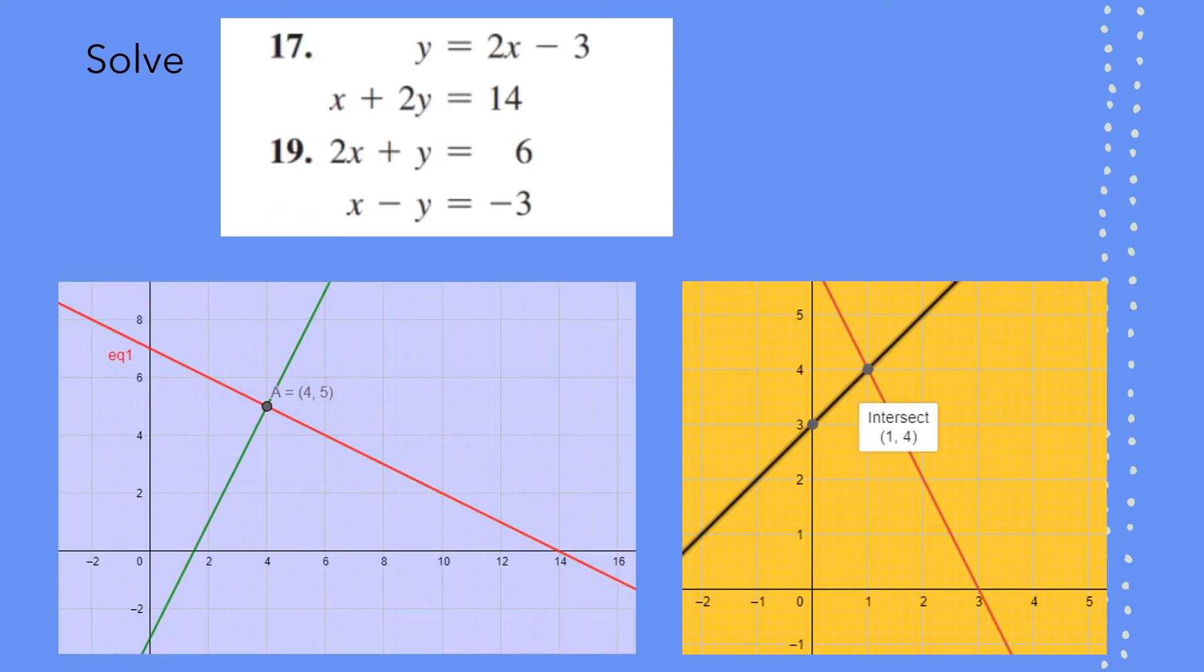Now, for the first equation here, you have a common point. We can also use GeoGebra instead of using graphing calculator. For the first set, we have a common point as 4, 5. So that is a solution to that system. For the second set of systems, we have an intersection at 1, 4. So that becomes a solution.